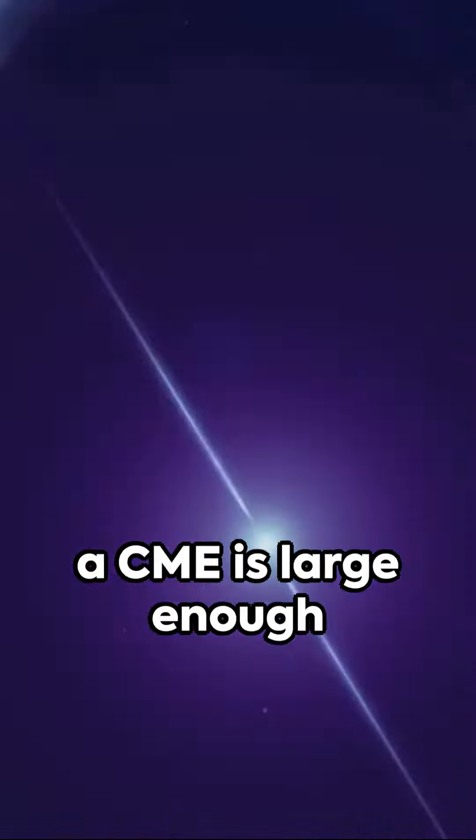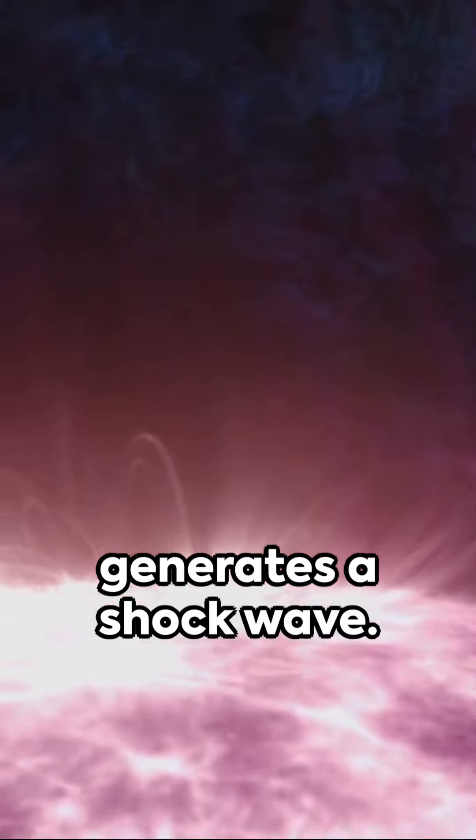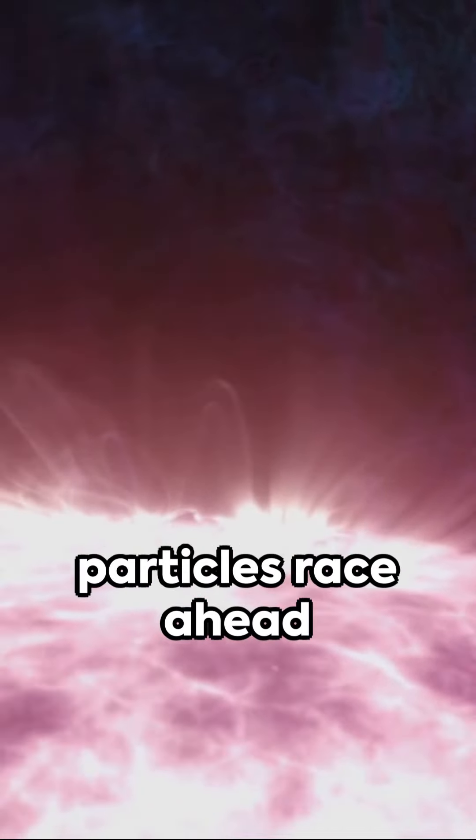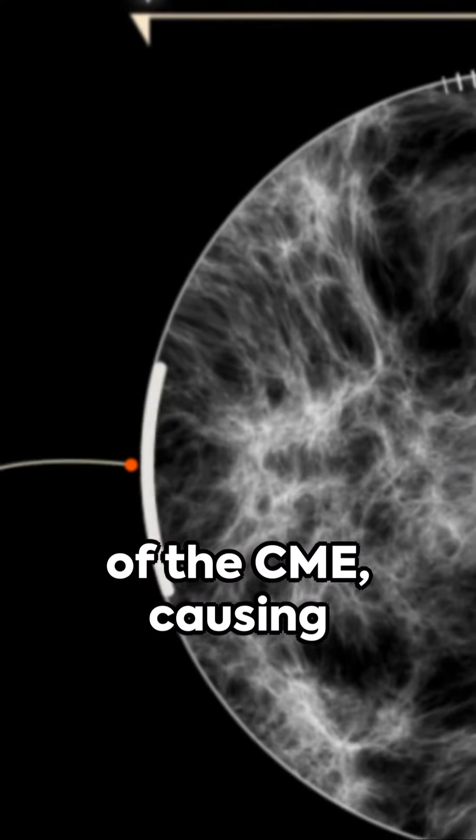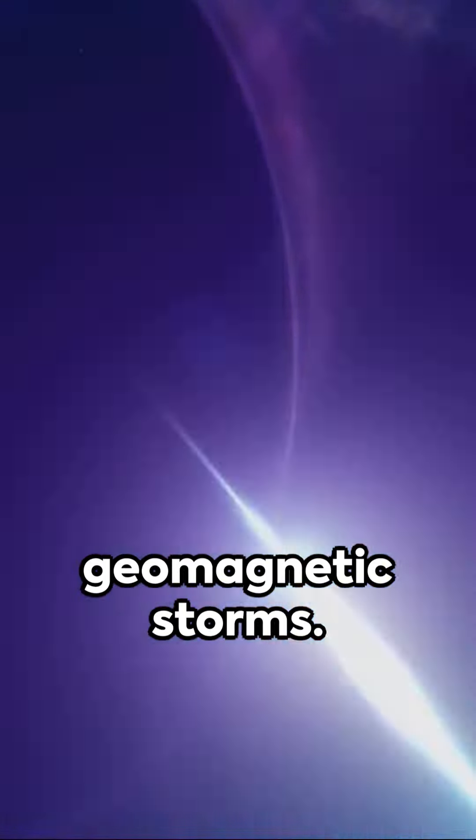And here's the twist: if a CME is large enough and faster than the solar wind, it generates a shock wave. Accelerated charged particles race ahead of the CME, causing space weather disturbances and intensifying geomagnetic storms.